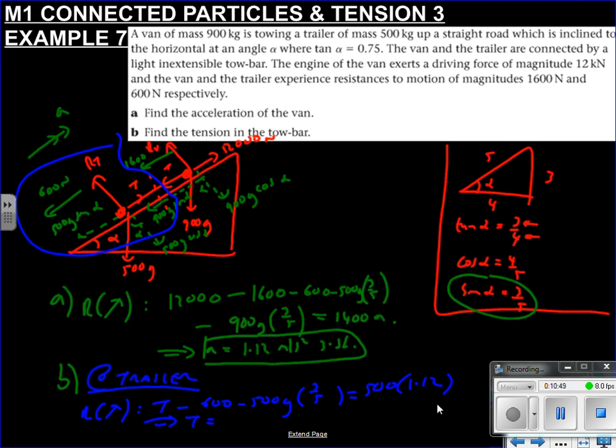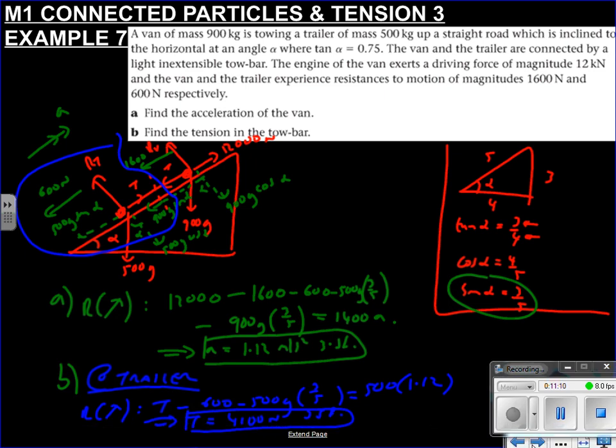Not sine of 3 by 5, which so many people seem to do. Mass is 500. And then our acceleration, which we just found. So if we rearrange, we should get T equals 500 times 1.12 plus 500 times 9.8 times 3 by 5 plus 600. 4,100 newtons, 3 significant figures because we've used g. And that's that one. Got any left? Yeah, one left.